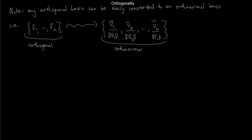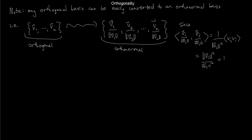Using the bilinearity of the inner product: if I take vi over norm(vi) dotted with itself, I can pull out 1/||vi|| twice, giving vi·vi on top and ||vi||² on the bottom — that's ||vi||²/||vi||² = 1. So the new vectors all have norm 1. And for i ≠ j, taking the inner product of vi/||vi|| with vj/||vj||, you pull out the norms from the bottom and still have vi·vj = 0 on top.